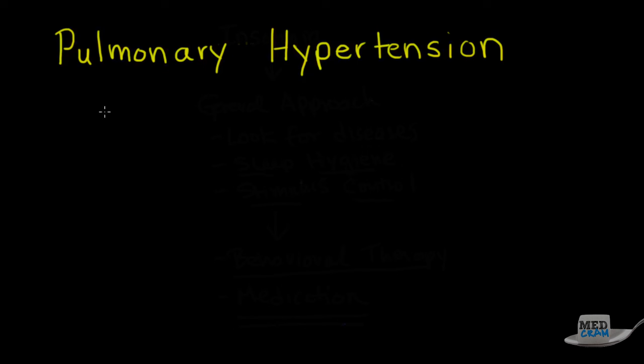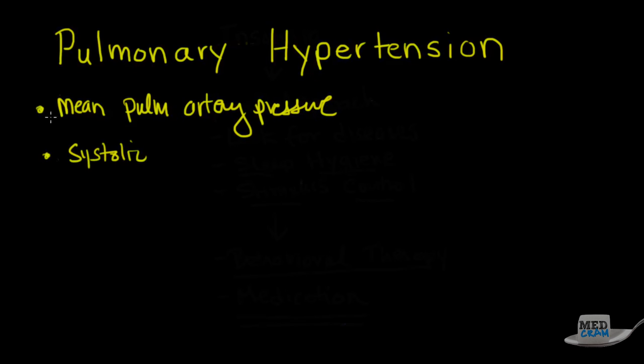You have to know the definition first of pulmonary hypertension, and there's a couple of ways of measuring it. The first one is looking at the mean pulmonary artery pressure, and by definition it's by the mean pulmonary artery pressure.